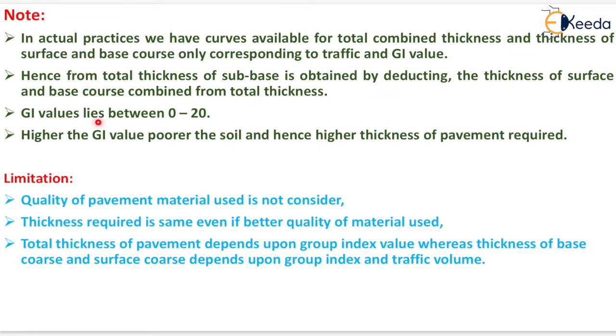Group index value lies between 0 to 20, higher the group index value, poorer the soil and hence higher thickness of pavement required. Now the limitations of group index method. Quality of pavement material used is not considered. Thickness required is same even if better quality of material is used. Total thickness of pavement depends upon group index value whereas thickness of base course and surface course depends upon group index and traffic volume.